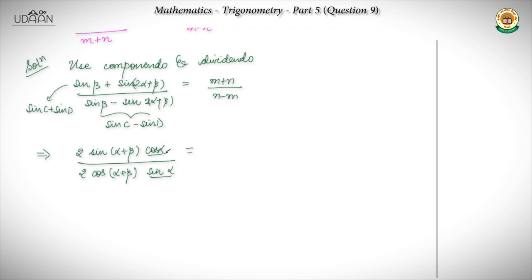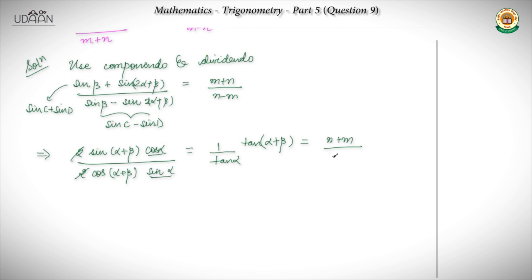Now I can see that sin α upon cos α is 1 upon tan α. The 2s cancel. And sin(α + β) upon cos(α + β) is tan(α + β). So this equals n plus m upon n minus m.